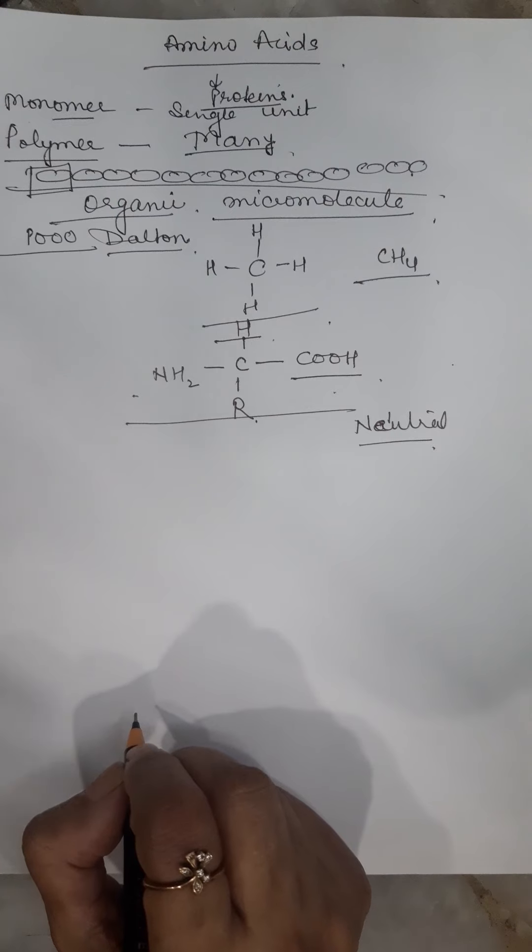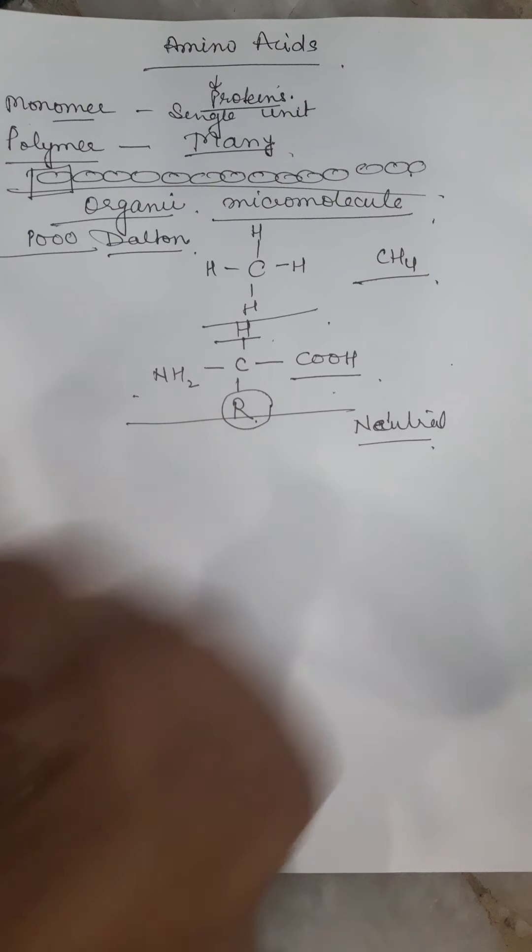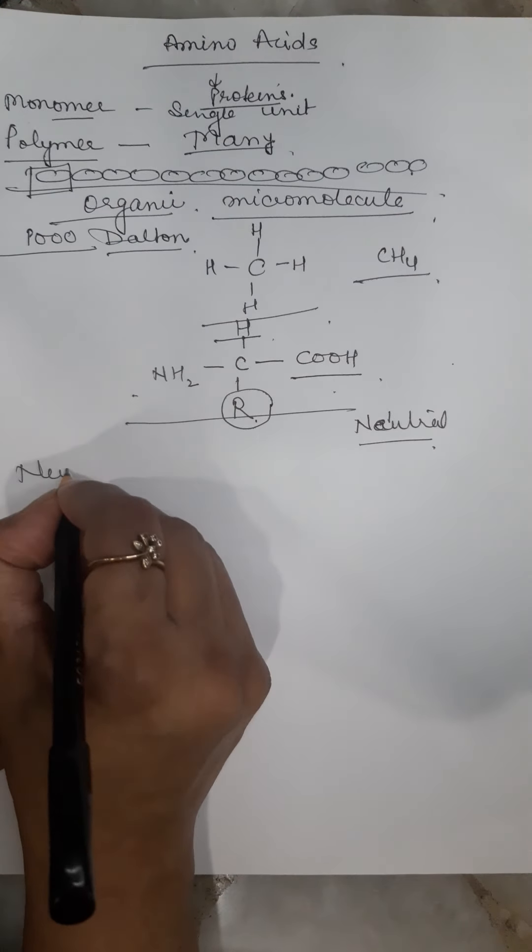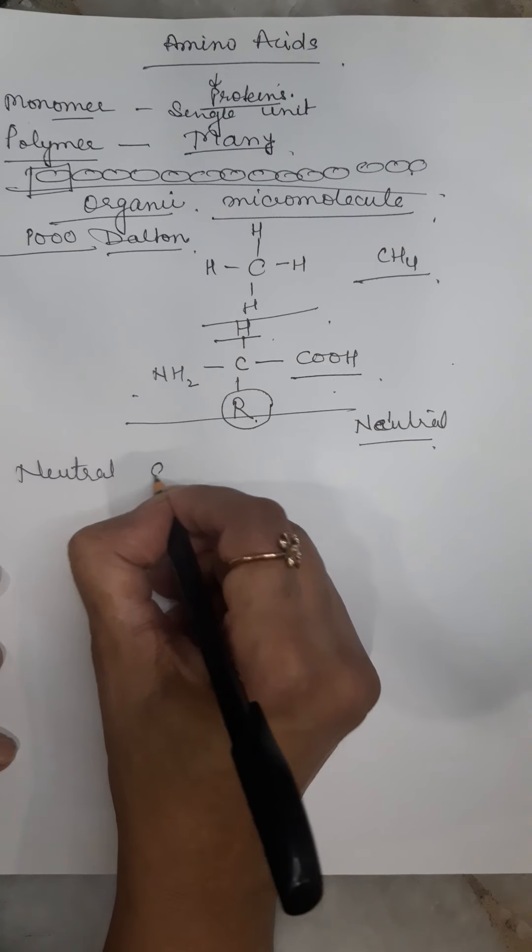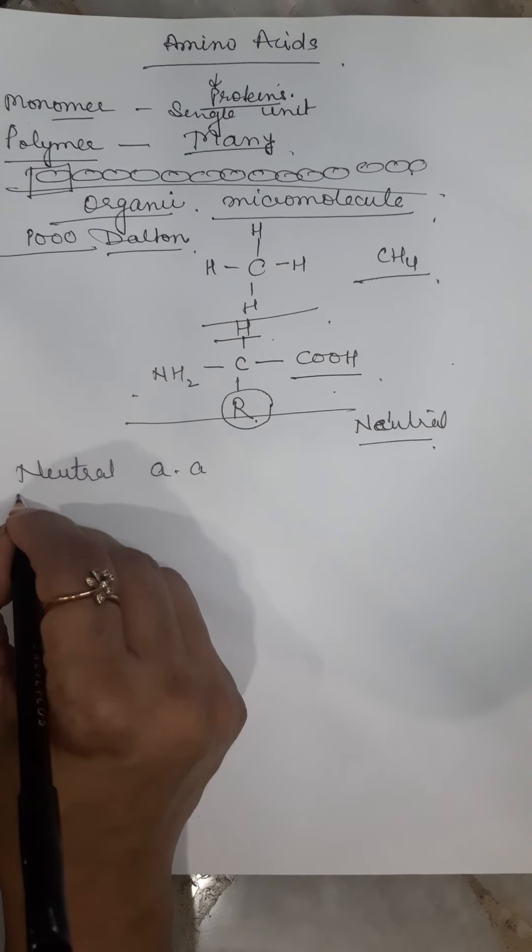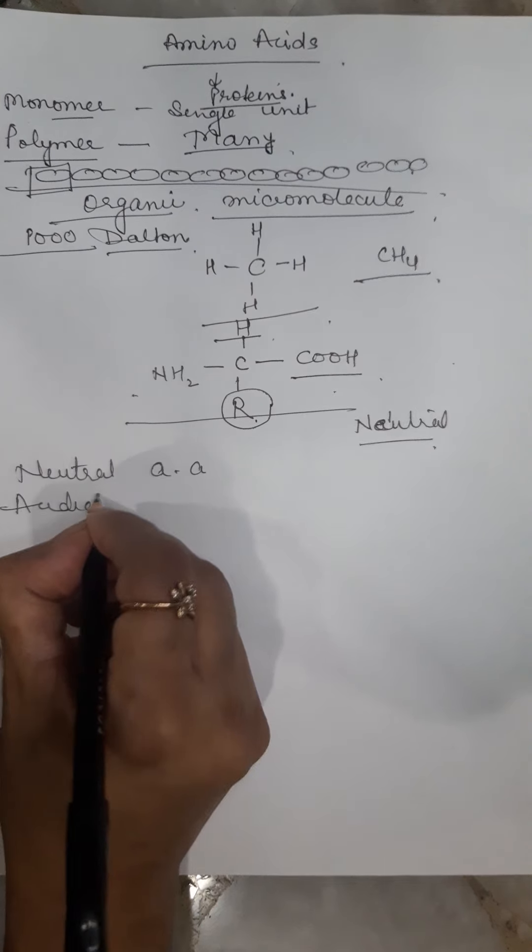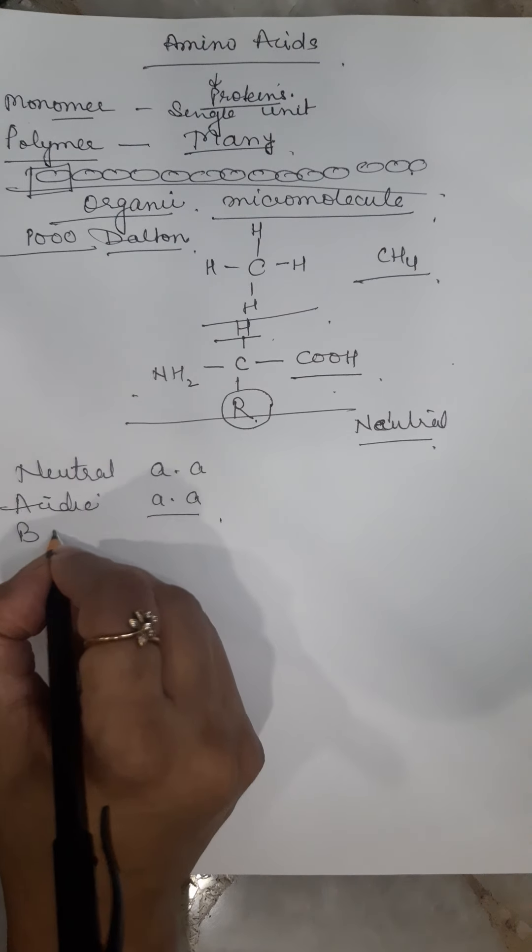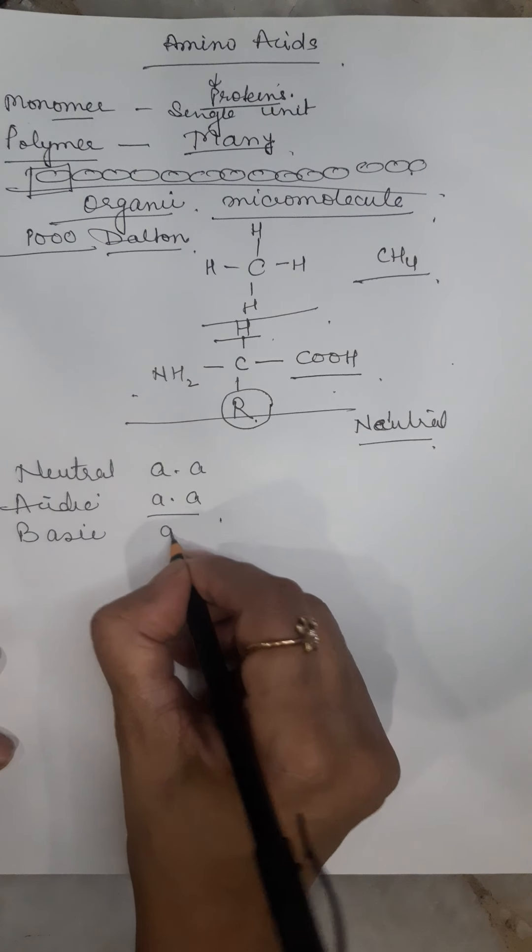But it is not that all amino acids are neutral. Depending on the nature of this R group, there can be neutral amino acid, acidic amino acid, or basic amino acid.